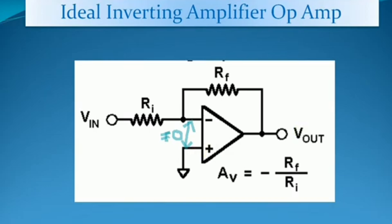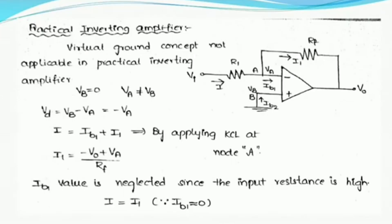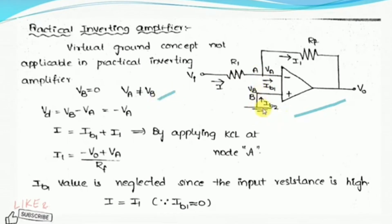Now we are going to derive the closed-loop gain of the same circuit where the op-amp is used in the practical case. Since the virtual ground concept is not applicable, Va — the node voltage at the inverting terminal — is not equal to Vb, the node voltage at the non-inverting terminal. From this circuit, the Vb value is 0. So the difference voltage Vd is Vb minus Va, which gives Vd equals minus Va.